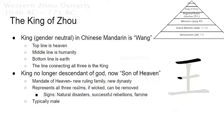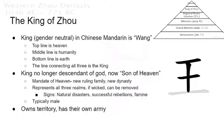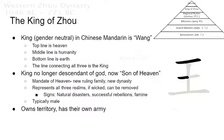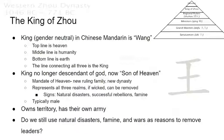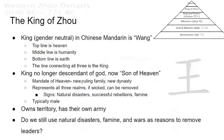Kings were typically male. The King of Zhou also owned territory themselves and had their own army. One question I have for all of you is: do we still use natural disasters, famine, and wars as reasons to remove leaders or change leadership?